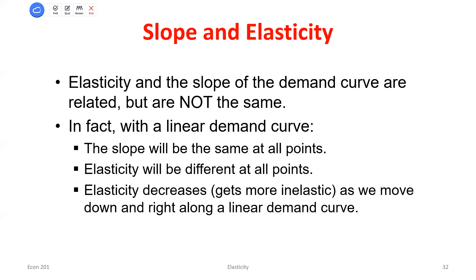The exact opposite is true when price is high and quantity is low. Changes in price, even large changes, might be very small percent changes. When quantity demanded is low, going from one to two units is a very large percent change in quantity demanded. So up at the top of the demand curve, we see really large percent changes in quantity demanded and really small percent changes in price — elasticities greater than 1, which is elastic. As I move down the demand curve, demand becomes more and more inelastic.